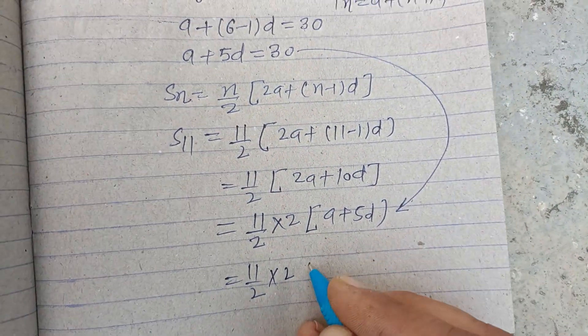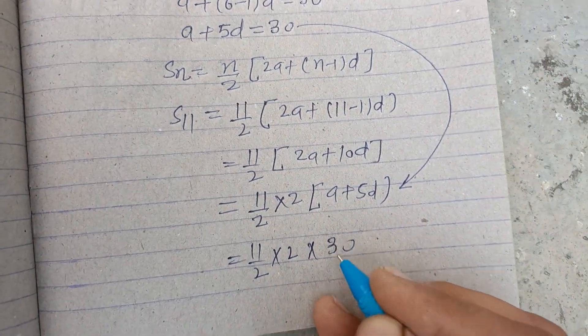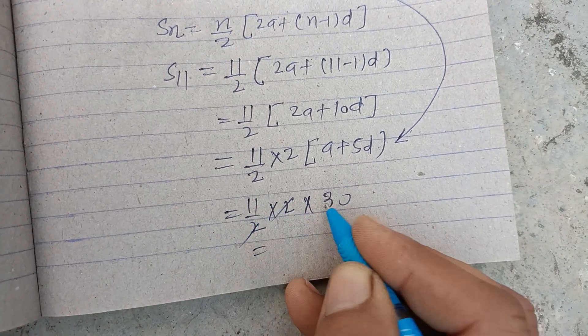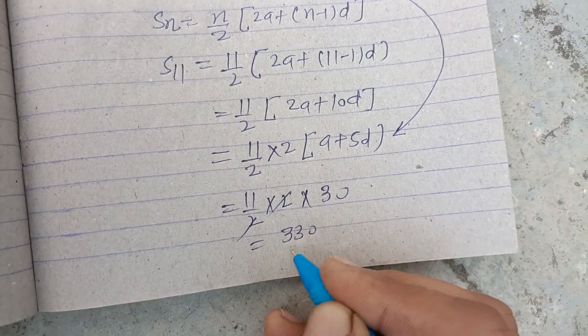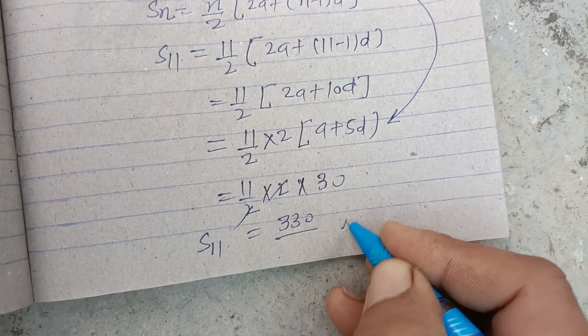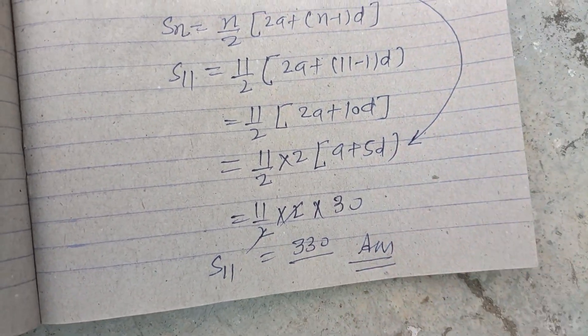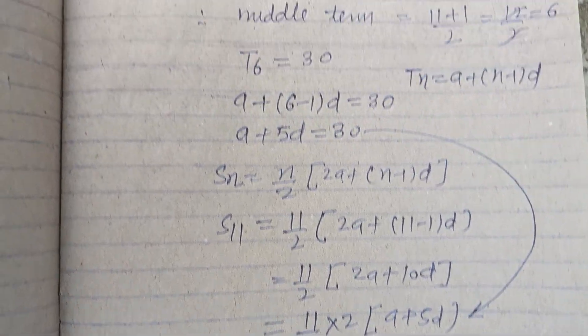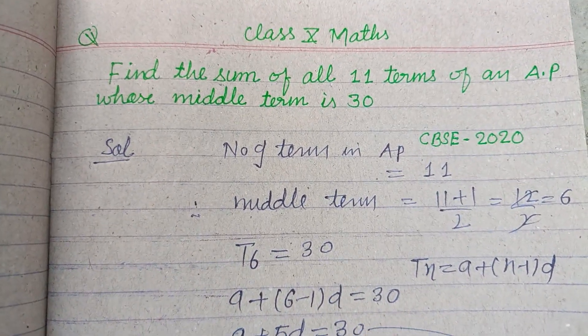From here, which is 30. So 2 cancels, 11 × 30 = 330. So 330 is the sum of 11 terms, and this is our answer. I hope you got it. Please like the video and subscribe to the channel.